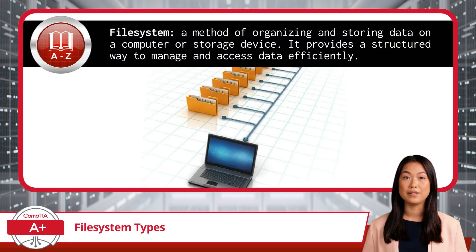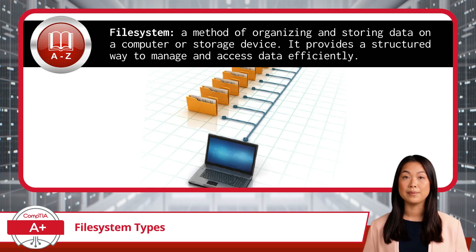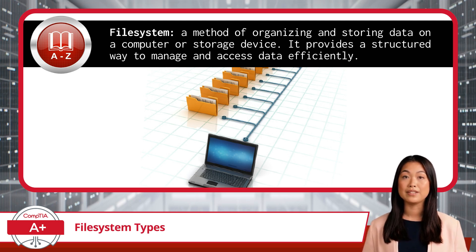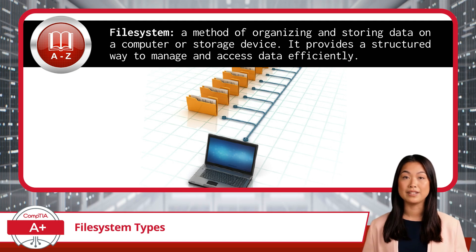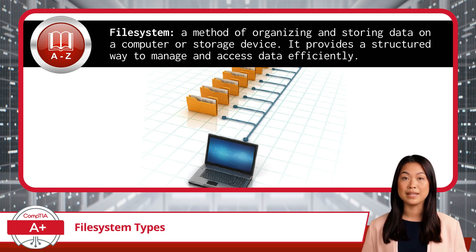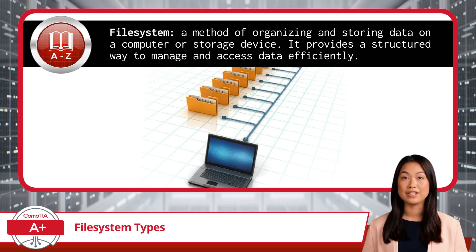In this video, we will cover what a file system is and some of the more common file system types. A file system in the context of computing is a method of organizing and storing data on a computer or storage device. It provides a structured way to manage and access data efficiently. Think of a file system as a digital filing cabinet — just like a physical filing cabinet organizes your documents, a file system does the same for your digital files, ensuring they are neatly arranged and easily accessible.